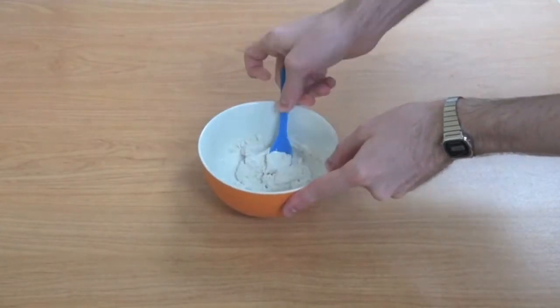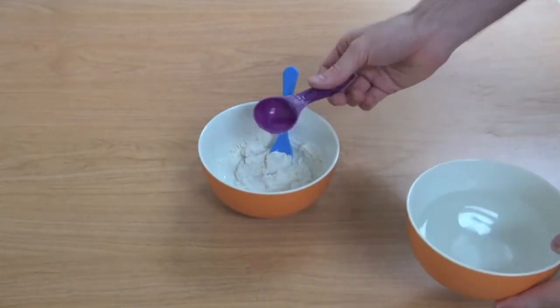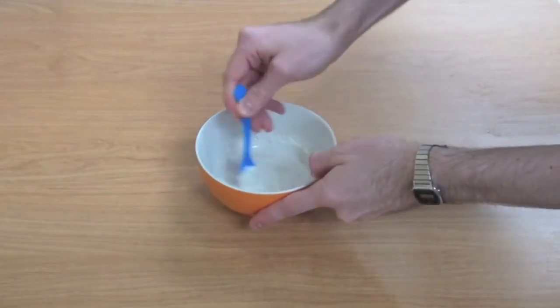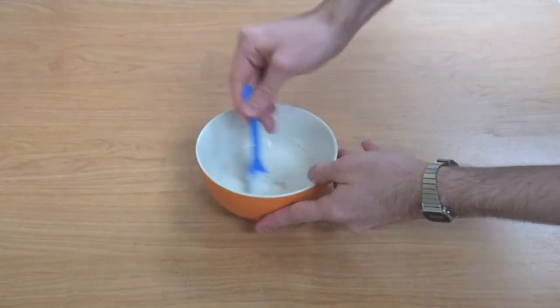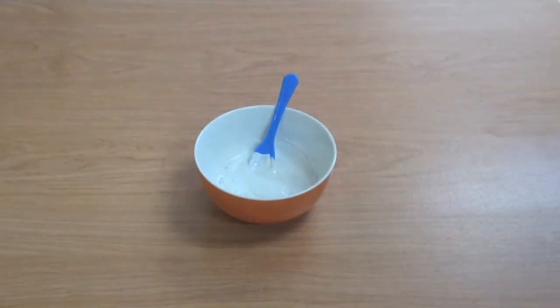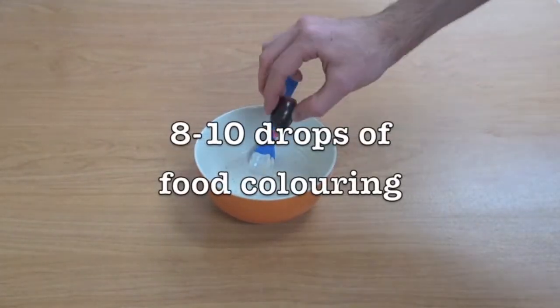If the mixture seems too clumpy, just add some more water. Next, you're going to add eight to ten drops of food coloring.